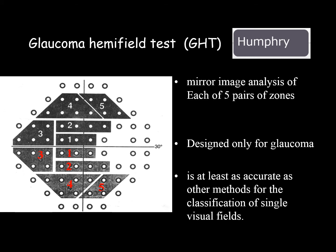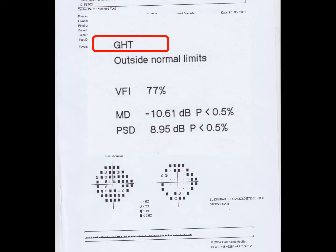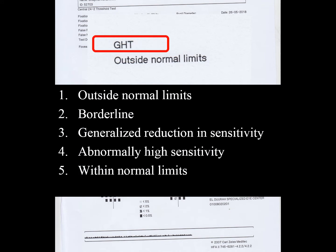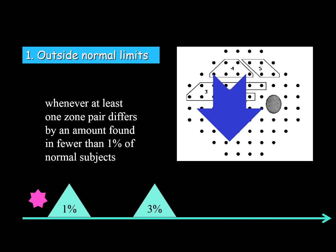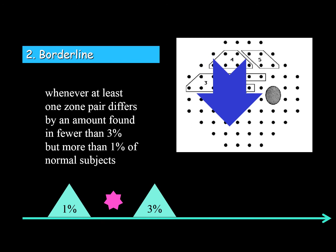The glaucoma hemifield test can detect early glaucoma even before any other field changes. In this example it reads 'outside normal limits.' One of five results will be written: outside normal limit, borderline, generalized reduction in sensitivity, abnormally high sensitivity, or within normal limits. 'Outside normal limit' is written when the difference between one zone up and one zone down is found in less than one percent of the normal population.